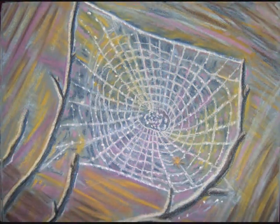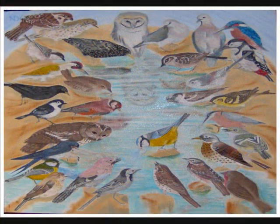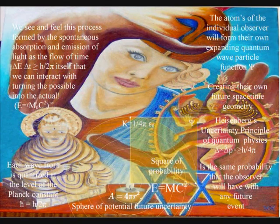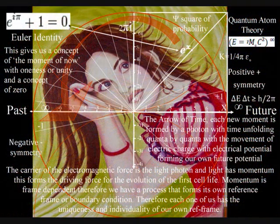With an understanding of how, we can answer the question why. In this theory, the different life forms will create their own reason why, out of the creativity and diversity that is innate within the evolutionary process. This process forms an infinity of possibilities for intelligent life to create a reason why.